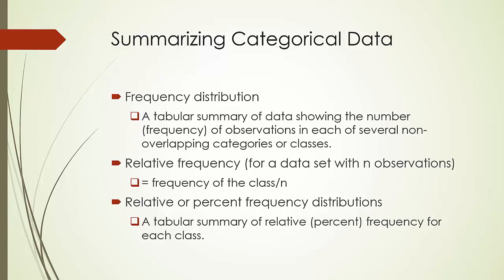For example, there are 600 female students and 400 male students in this graduating class. Suppose there is a dataset with n observations. Relative frequency is defined as the frequency of a class divided by n. For our previous example, the relative frequencies of female and male in the graduating class are 0.6 and 0.4 respectively. The textbook differentiates percent frequency from relative frequency.